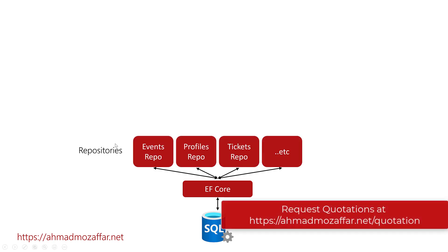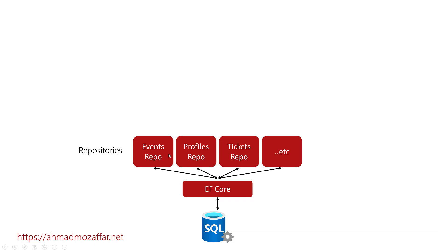On top of the data layer, we will have a set of repositories — for example, events repository, profiles repository, tickets, etc. Those repositories will wrap the functionalities of Entity Framework and provide them to the top layer as abstractions. This means the application won't be tightly coupled to Entity Framework — if we decide to switch to Azure Cosmos DB, we just create a new implementation for those repositories.